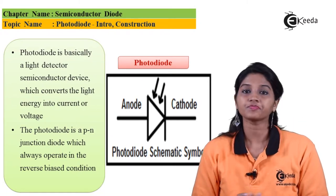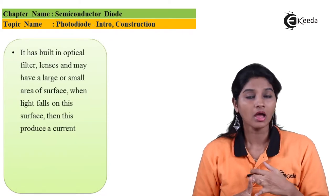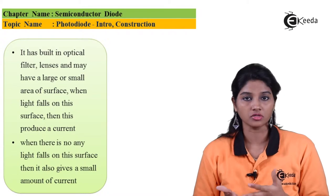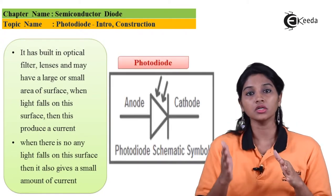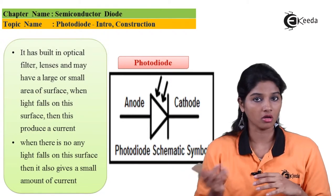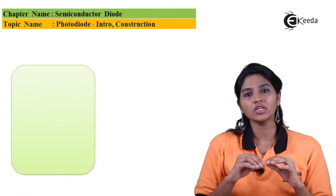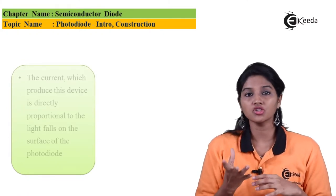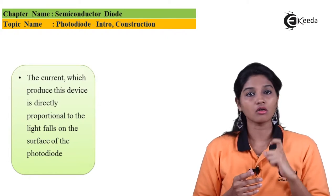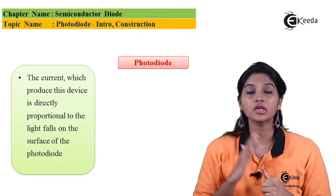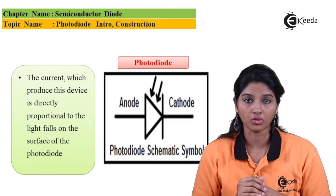The photodiode consists of optical lenses, an optical filter, and a small or large surface. Whenever light falls on that surface, the light is converted into an equivalent electrical signal — that is, voltage or current. When there is no light falling on the photodiode, a very small amount of current is generated, which is negligible or approximately equal to zero. The current or voltage produced at the output of the photodiode is directly proportional to the intensity of the light falling on it.